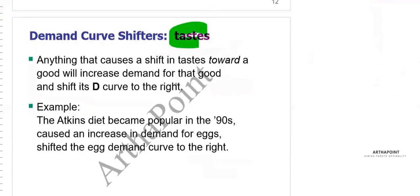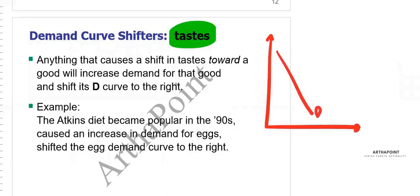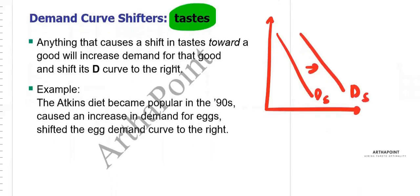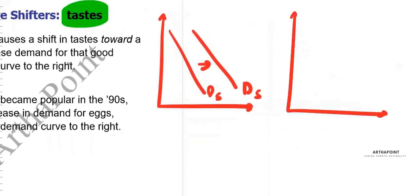The next factor is taste and preferences. If all of a sudden people want to start consuming healthy products, there is automatically a shift towards health-conscious products, increasing the demand for those products. For example, the demand for spinach juice is increasing because people are becoming diet-conscious. During COVID-19, the demand for coconut water increased.